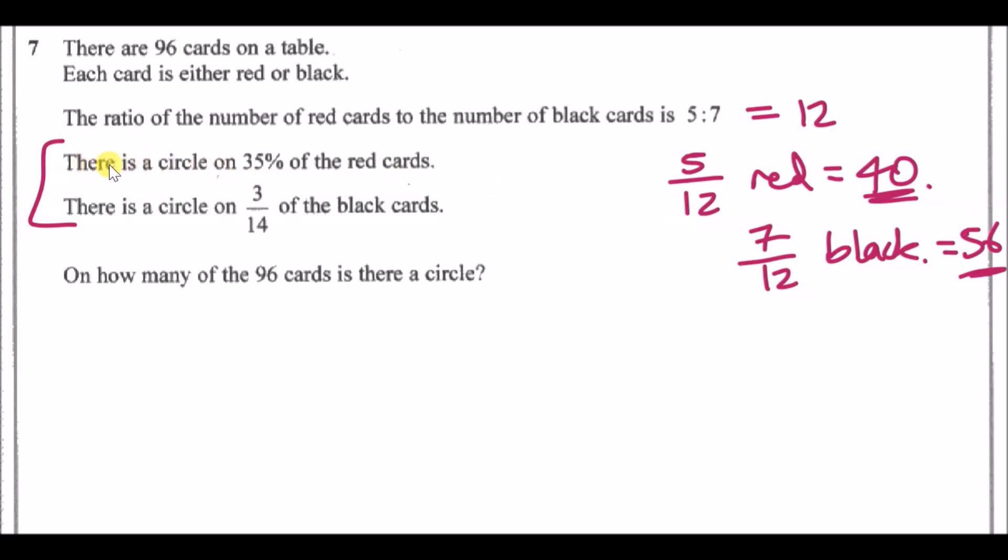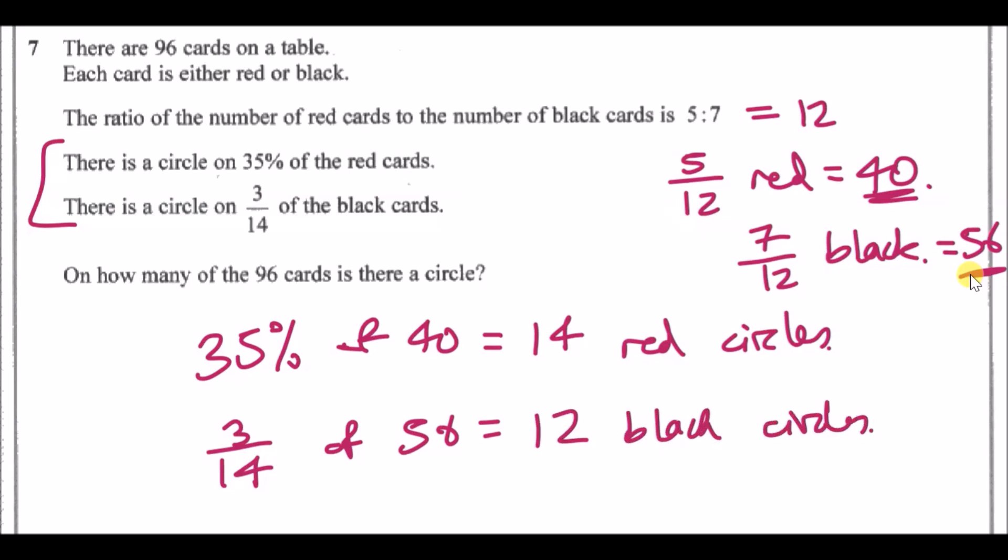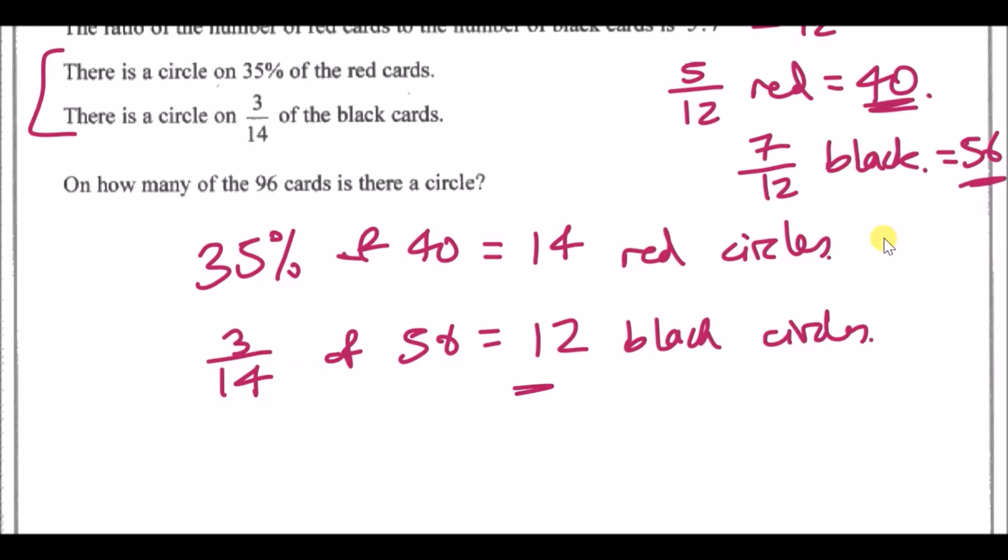There is a circle on 35% of red cards, so out of 40 you've got to find 35% of 40, which gives you 14 red circles. There is a circle on three-fourteenths of black cards, so three-fourteenths of 56 gives you 12 black circles. On how many of the 96 cards is there a circle? Adding up the circle cards, 14 + 12, you get 26 circle cards. That's it guys.